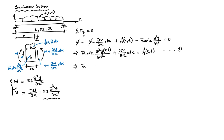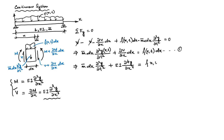Substituting these expressions, what we get is: m̄ (∂²y/∂t²) + EI (∂⁴y/∂x⁴) = f(x,t). That is the equation of motion for this continuous system. We will identify the boundary conditions and initial conditions in a moment, but first we have the equation of motion.